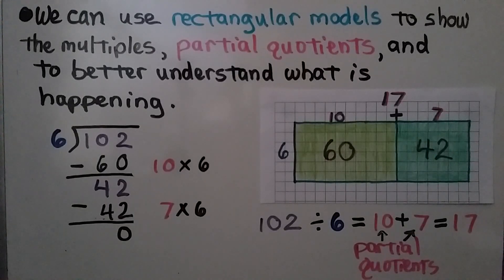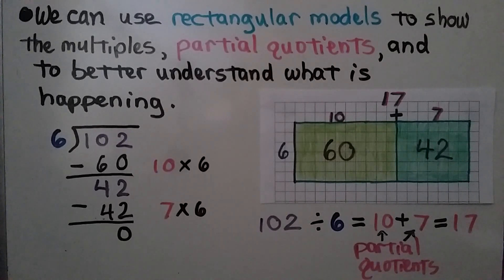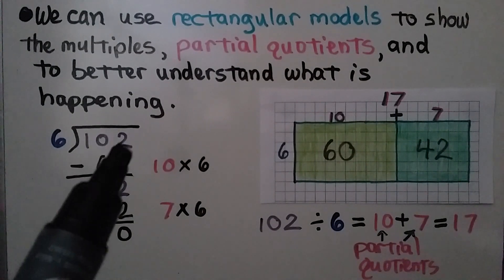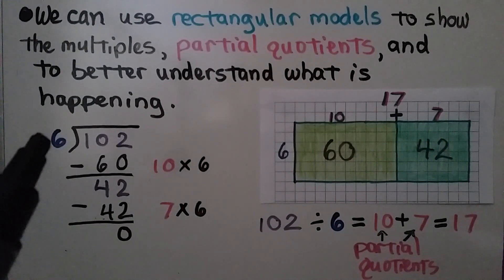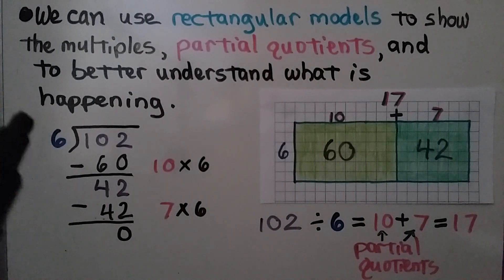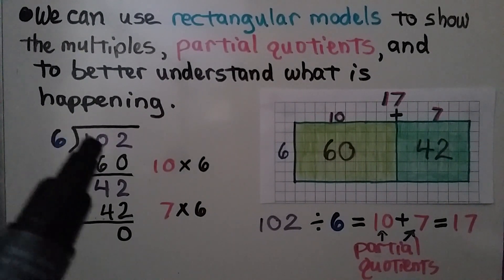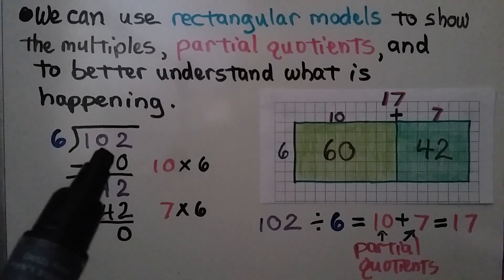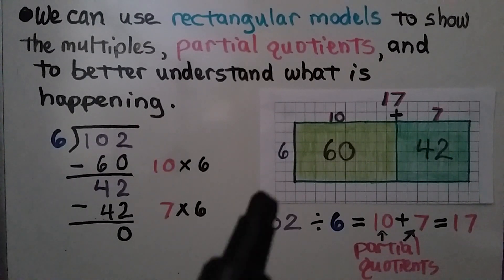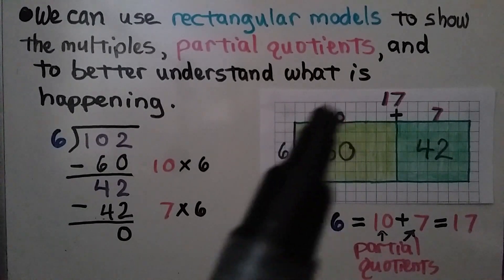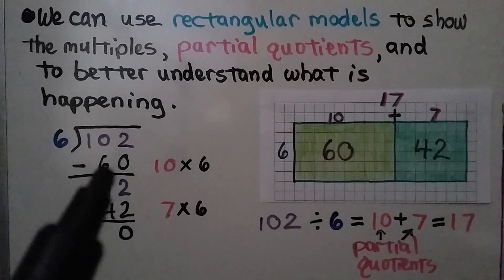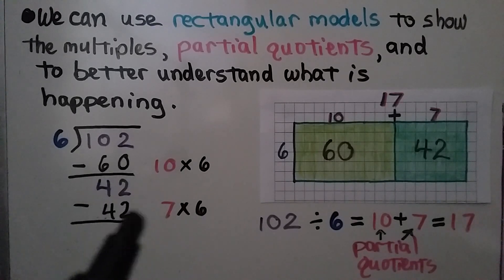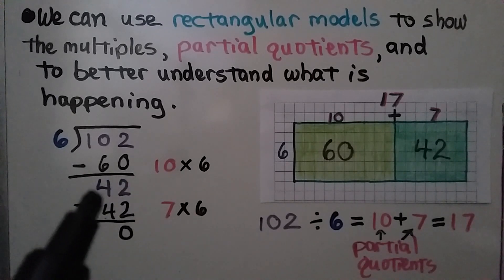We can use rectangular models to show the multiples, partial quotients, and to better understand what is happening. We have 102 divided by 6. We need to find how many times 6 can fit into 102. We think, well, 6 times 10 is 60, so we can subtract a 60. And the difference is 42.